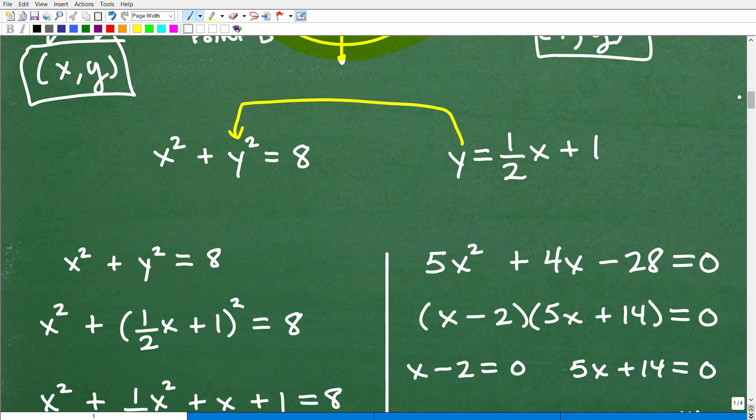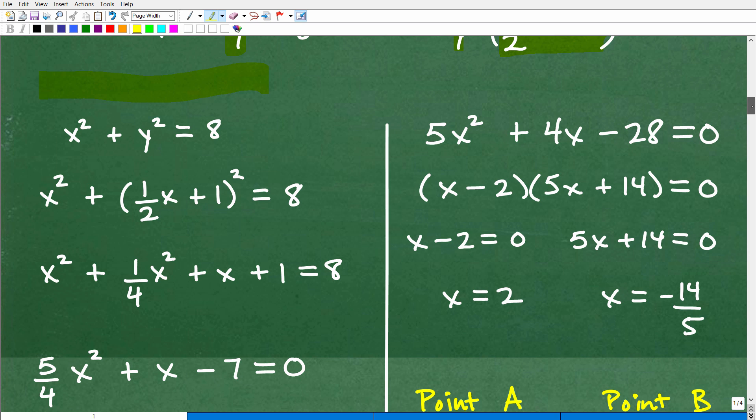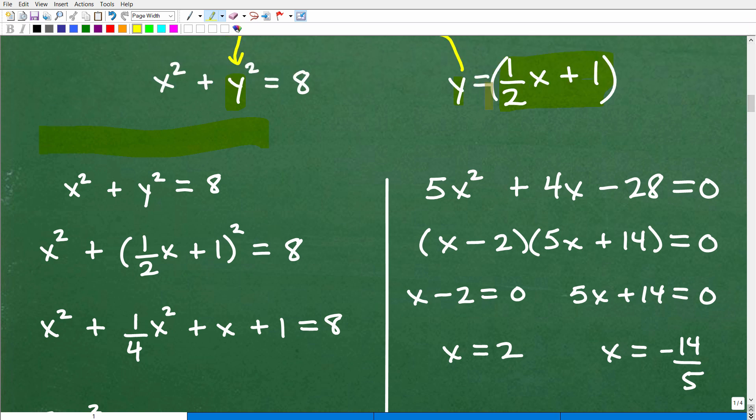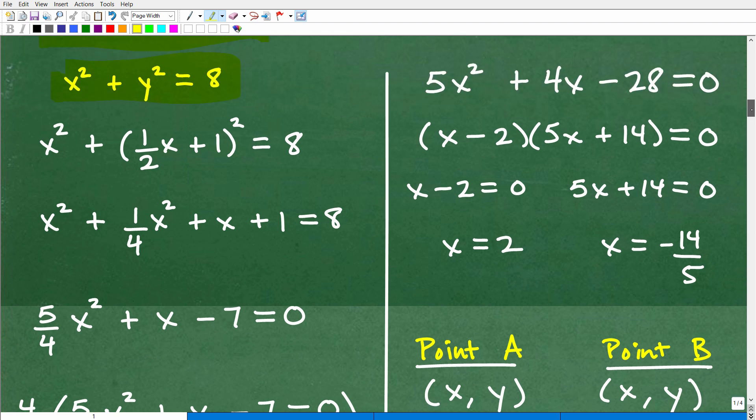All right. So again, what we want to do is use the substitution method. We're going to replace that y, okay? Because we know y is equal to all of this. We're going to replace this y with this. And anytime you're using the substitution method, you want to use parentheses. So let's go and focus our attention over to the left-hand side here and plug in this right here, one-half x plus one. We're going to replace this y with one-half x plus one. So here is our equation for our circle. Now, I kind of wrote a little bit smaller here, so we can kind of see what's going on. But hopefully you can kind of follow what I'm saying.